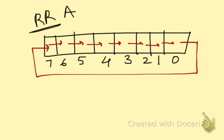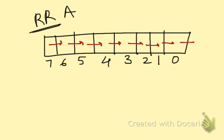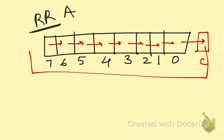This is how the rotate right operation works. What if we use a carry flag? The carry flag is used here when you're using the rotate right operation. The data in zero goes to the carry flag, and the data in the carry flag bit goes into seven. This is how the rotate right operation with the carry flag works.